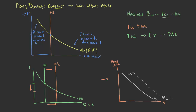With aggregate demand, the important components are consumption, investment, government expenditures, and net exports. At the same price level, with more money available to hold and spend, we'd see an increase on the consumption side as well as possibly an increase on the investment side.